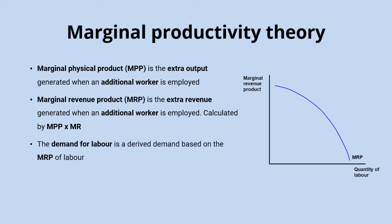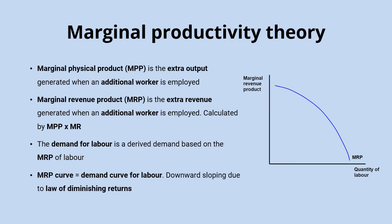The demand for labour is a derived demand, which means it's demanded not for its own sake, but for the output that it produces. Remember that the demand for labour comes from the firms that are actually employing these workers. As the employing firm, the most important thing when determining how much labour to employ would be the extra revenue that these workers are going to bring in.